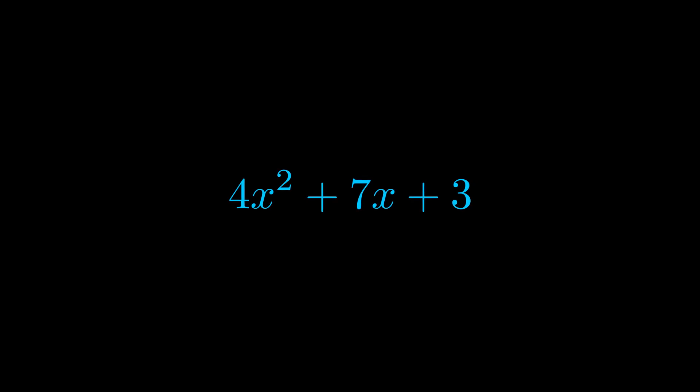Here we can see that our a value is the coefficient on the x squared term and our c value is the constant term. When we multiply these two values we get this value here in magenta.